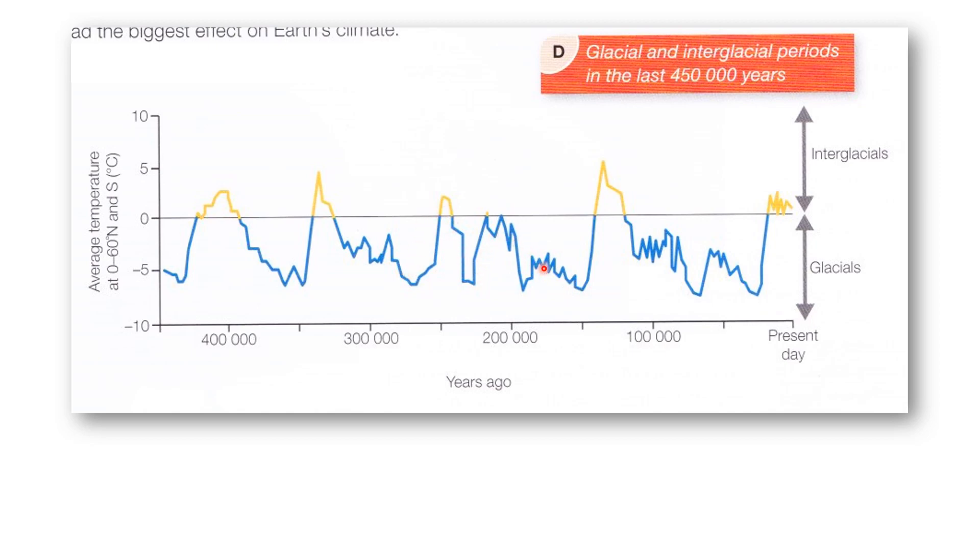A posh word for this is to say that the temperature is fluctuating or it fluctuates. All this posh word means is it goes up and down.